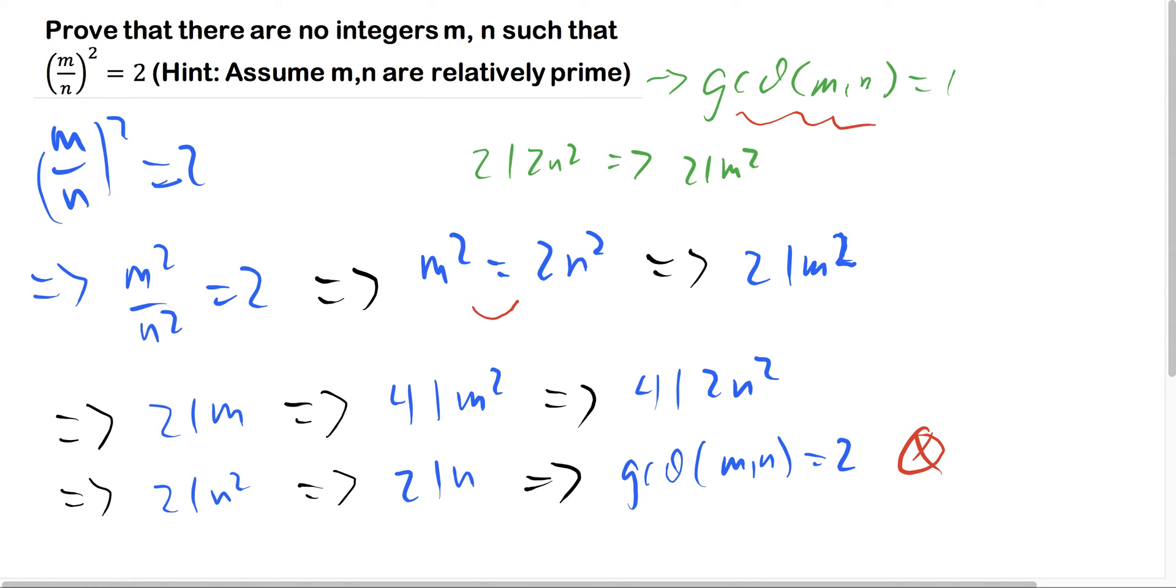The opposite of them being relatively prime, so that means the GCD of m and n equals 2, then they're not relatively prime, which is a contradiction.